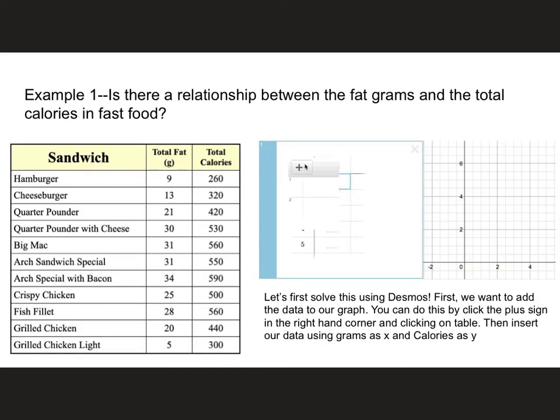We're going to focus on using Desmos for these problems to calculate the line of best fit. In this example, we're going to look to see if there's a relationship between the fat grams and the total calories in fast food. Here we have a data table that talks about the sandwich, the total fat, and the total calories.